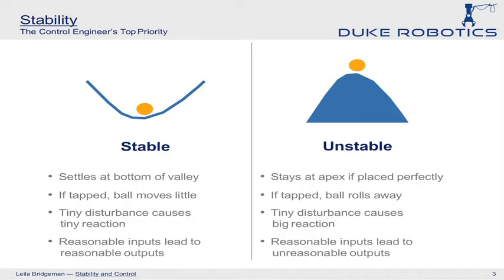As a control engineer, my first job is really to try and stabilize the system about the desired operating conditions. So what exactly is stability? The classic example is to compare a ball on the top of a hill versus a ball at the bottom of a valley. If you can balance a ball perfectly at the top of the hill, and likewise you could place a ball at the bottom of a valley, it'll stay still.